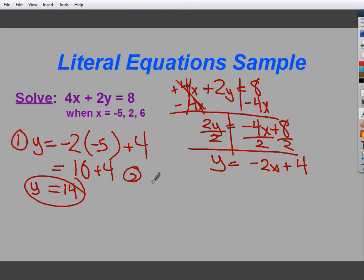Second one, y is equal to negative 2. My parenthesis will have a 2 in it, plus 4. So, I do negative 2 times 2. Sorry, the negative kind of hides there, but it is negative. So, negative 4 plus 4. And, negative 4 plus 4, of course, is 0. So, in that case, y is equal to 0.